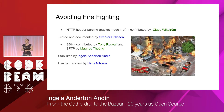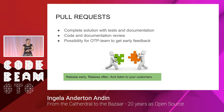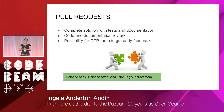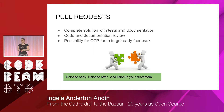Then Hans Nilsson rewrote it again to use the gen_statem behavior. Nowadays, pull requests let us handle user contributions and we get complete contributions with tests and documentation. It has also given us code reviews, documentation reviews, and the possibility for the OTP team to get early feedback — which is great because phasing out old APIs is a pain for everyone.